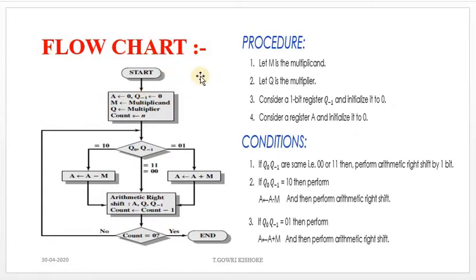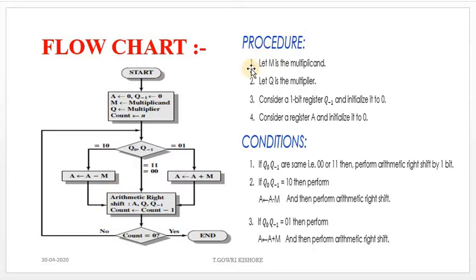This flowchart represents how we need to perform Booth Multiplication. It shows the procedure and conditions for operating the Booth Multiplier. In the first point of the procedure, let capital M be the Multiplicand, and let capital Q be the Multiplier.